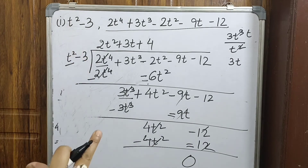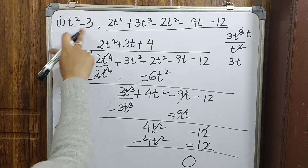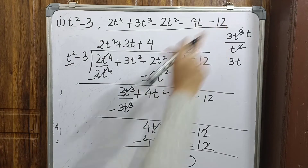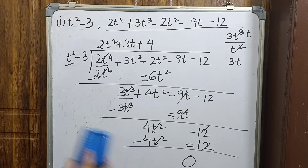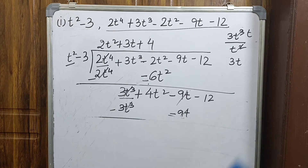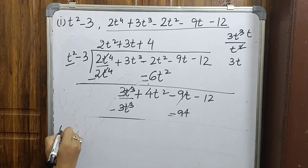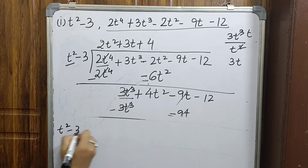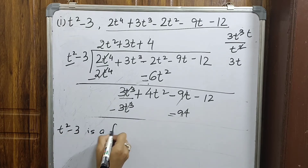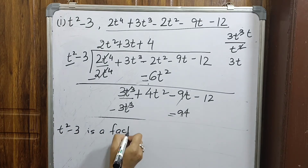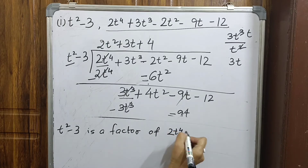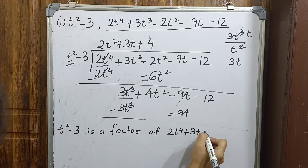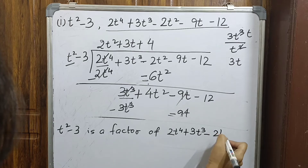Since the remainder is 0, the first polynomial t² - 3 is a factor of the second polynomial 2t⁴ + 3t³ - 2t² - 9t - 12.